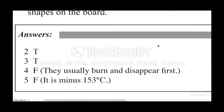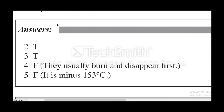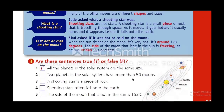Here are the answers. Number two is true. Number three is true. Number four is false — they usually burn and disappear first. Number five is false — it's minus 153 degrees Celsius. Thank you. That was Lesson One; wait for Lesson Two.